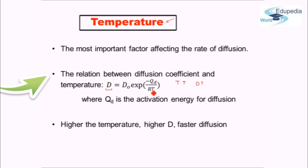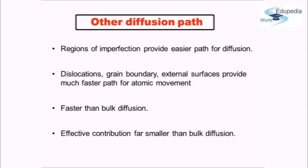We will be tailoring the temperatures such that our diffusion rate is high, or as per our requirement, without affecting other relevant properties. Now let's see some alternative paths of diffusion. These alternative paths are basically the defects in the material. We have seen the different kinds of defects — dislocations, grain boundaries, and the external surface. Those places are regions of high energy; they already have high energy and want to lower their energy. Therefore, those are regions or paths which are very effective for any atom to move about.